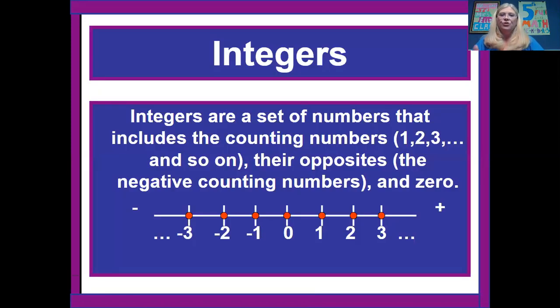So integers are the set of numbers that include all the counting numbers. One, two, three, four, five, and so on. And their opposites. That's all those negative counting numbers. And zero. Those are all integers.